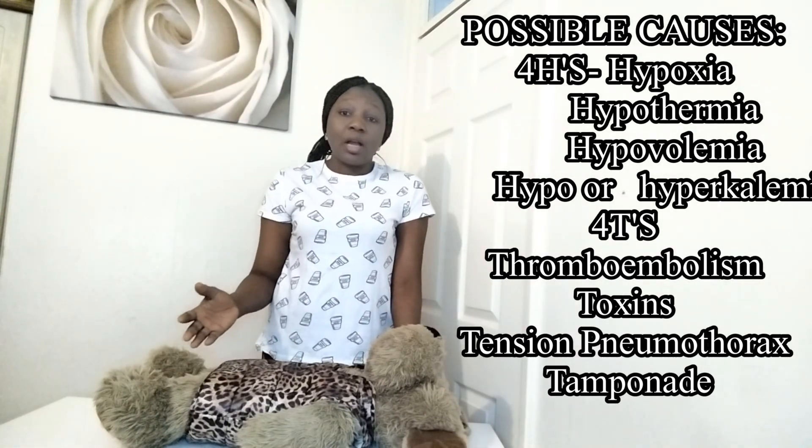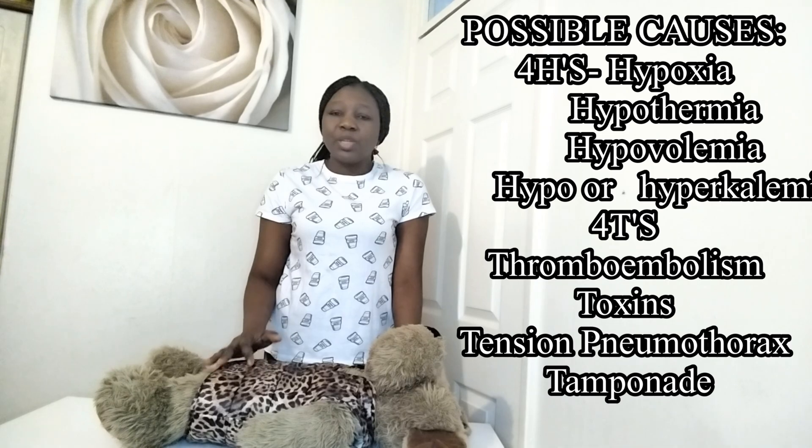My recommendation is that you carry out further investigations to find out what could be the cause of this patient going unconscious — what could be the cause of this cardiac arrest. The assessor may ask you what you think could be the cause, and you can tell them it could be hypokalaemia, hypoxia, and some other things. That is how to go about this station — it's a simple station. Thank you so much for watching. Drop any comments in the comment section and don't forget to subscribe to our YouTube channel.